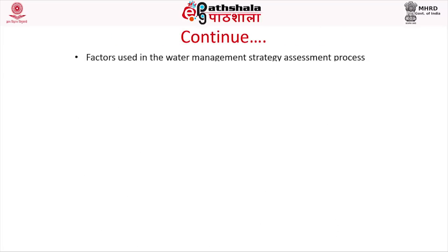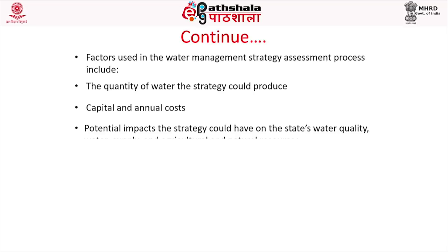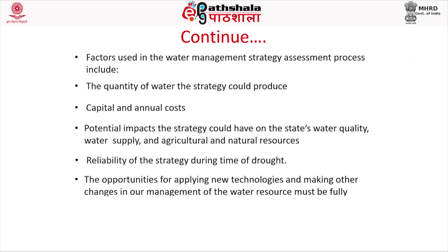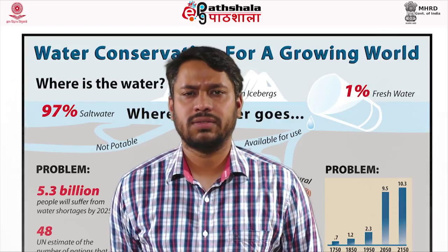Factors used in the water management study assessment process include: the quantity of water the strategy could produce, capital and annual costs, potential impacts on the state's water quality, water supply, agricultural and natural resources, and reliability during drought. Opportunities for applying new technologies and making management changes must be fully assessed and implemented as soon as possible. Water resources shall be managed in a manner that results in the greatest long-term benefits for the people.